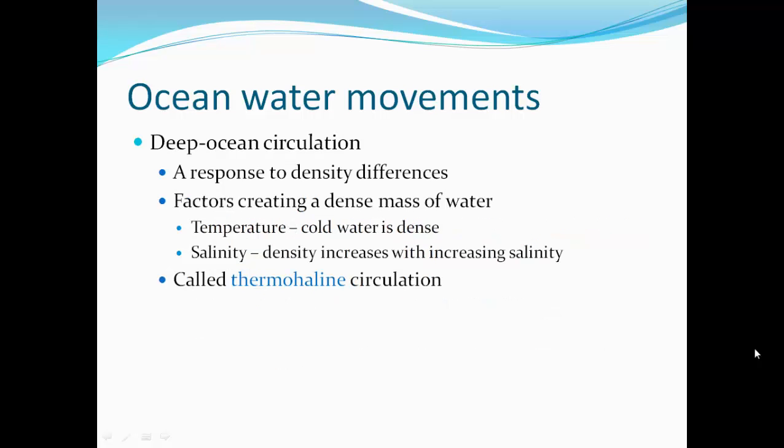Deep ocean circulation is a response to density differences. Factors creating a dense mass of water are temperature — colder water is denser — and salinity, as density increases with increased salinity. This is called thermohaline circulation: 'thermo' referring to temperature and 'haline' referring to salinity.